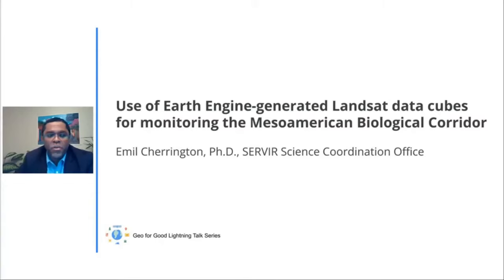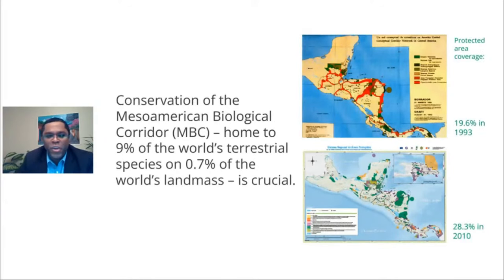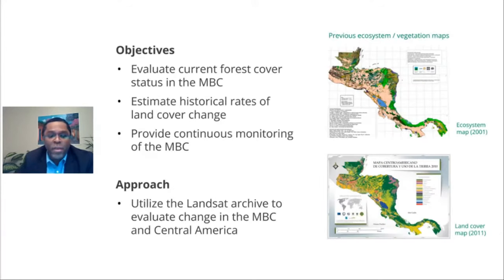Hi everyone. The challenge we're using Earth Engine to address is monitoring the Mesoamerican Biological Corridor. The MBC is a network of protected areas and the corridors connecting those reserves, set up in 1993 by the governments of eight countries to protect this biodiversity hotspot, where 9% of the world's terrestrial species are found on less than 1% of the world's landmass. Regional institutions like the Central American Integration System have been requesting more recent information and trying to understand how the region and MBC have changed since the corridor was established. That's where Earth Engine comes in, with its access to the full Landsat Archive and ability to provide regular monitoring.